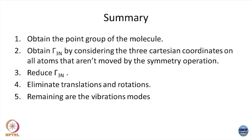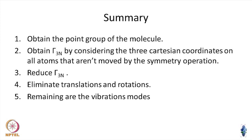To summarize what we have done so far: first you need to know the point group of the molecule, then you obtain either the complete motion of the molecule which has 3n degrees of freedom, or you can subtract out translation and rotation and write the vibrational representations. The key is that the characters encode which atoms are not moved by the symmetry operation — nc is the number of atoms not moved by the operation. Then reduce by the conventional decomposition, eliminate translation and rotation if you started with 3n degrees of freedom, and the remaining modes are the vibrational modes.